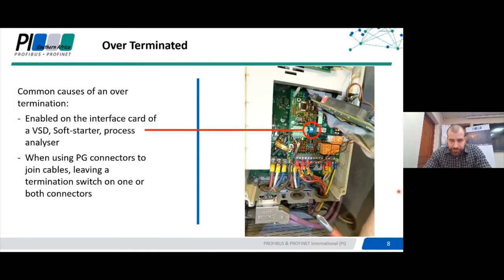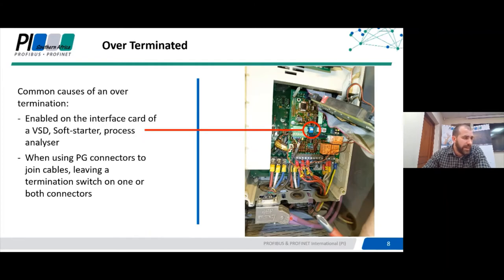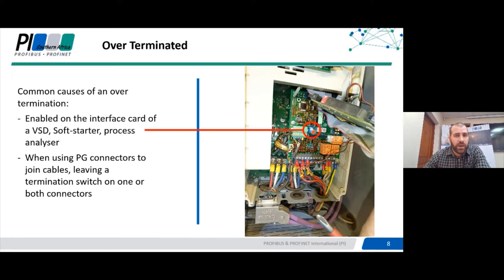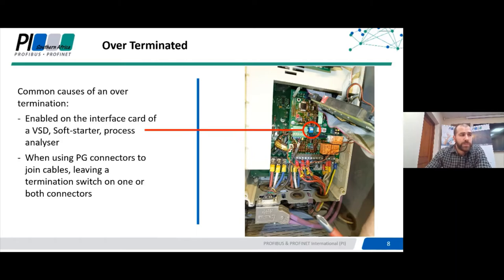In this picture you can see the cover has been removed off a VSD. The Profibus cable comes into a sub-D9 connector and then daisy chains out, so this is not the end of the segment — it's actually the middle. This connects to the chassis of the VSD, and a cable runs up to a Profibus interface card. On this interface card you have indicator lights and two rotary dials to hard-set the Profibus address, which obviously has to be unique. There's also a double-pole blue dip switch visible — it's in the up or on position. By turning this on you are enabling the resistor circuit built into this card.